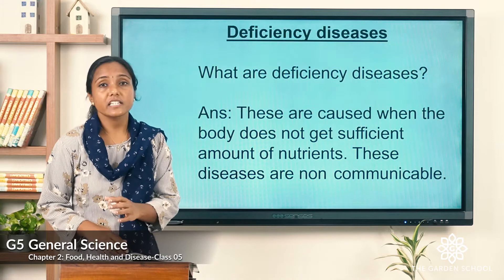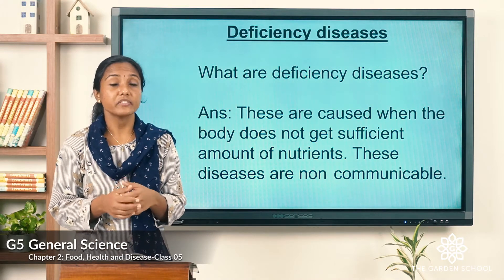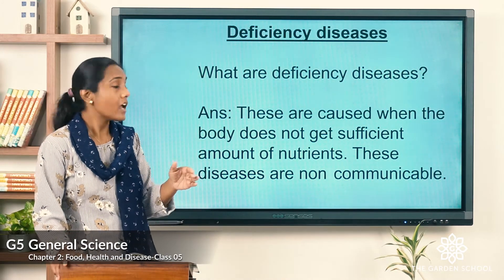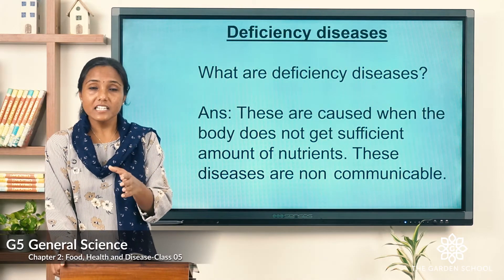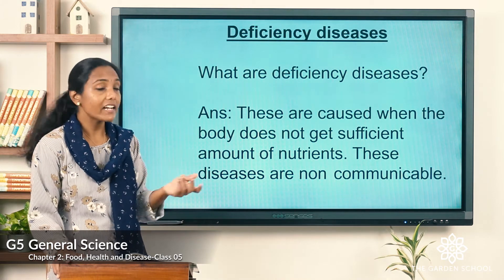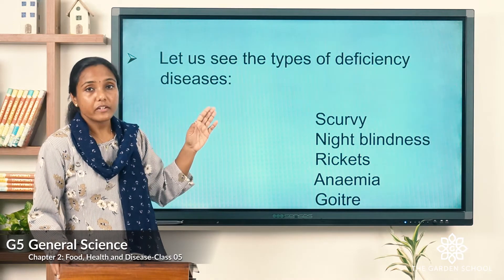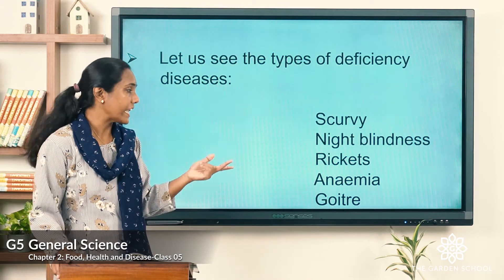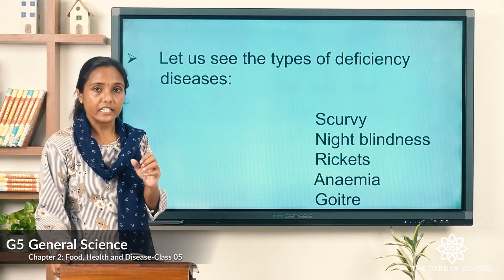Now let us learn about deficiency diseases. Deficiency diseases are caused when the body does not get a sufficient amount of nutrients. Let us see what types of deficiency diseases exist. The types are: scurvy, night blindness, rickets, anemia, and goiter. Let us look into each one of them in detail.